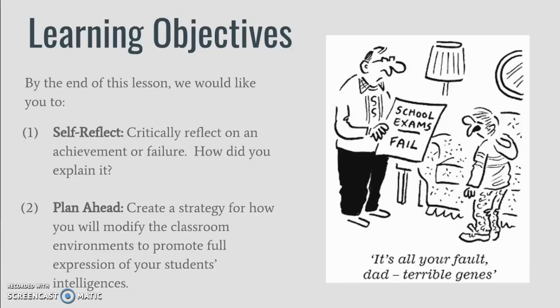By the end of this lesson, we would like you to critically reflect on the achievements of your own — maybe you got an honor roll, maybe you did not. How did you explain the overall experience? Did you justify your successes and downfalls in terms of your genes, your nature, or was it because of the way that you were raised, the way you were nurtured? We would also like you to start creating a strategy for how you will modify the classroom environment to promote the full expression of your students' intelligences.